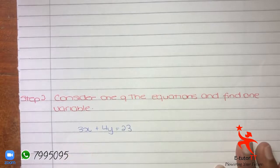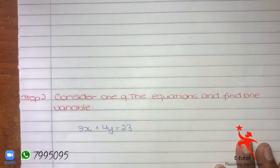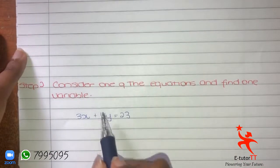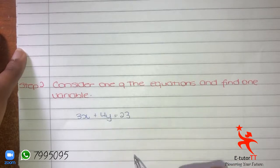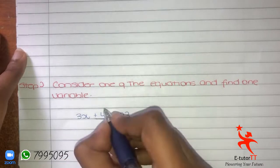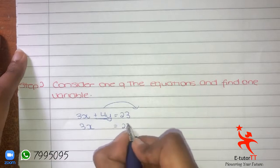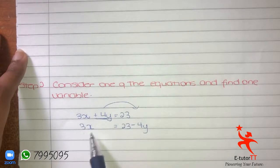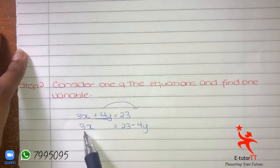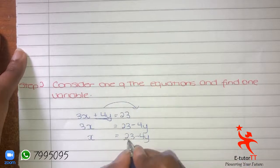We're going to use equation 1 to find X. When we want to find a variable, we want that variable on one side of the equal sign and everything else on the other side. So we carry across the 4Y — an important rule is that whenever we carry something across the equal sign, we do the opposite. Here we're adding 4Y, so on the other side we subtract it: 3X = 23 − 4Y. We don't want the 3 there, so we carry it across too — we're multiplying by 3, so we divide: X = (23 − 4Y) / 3.